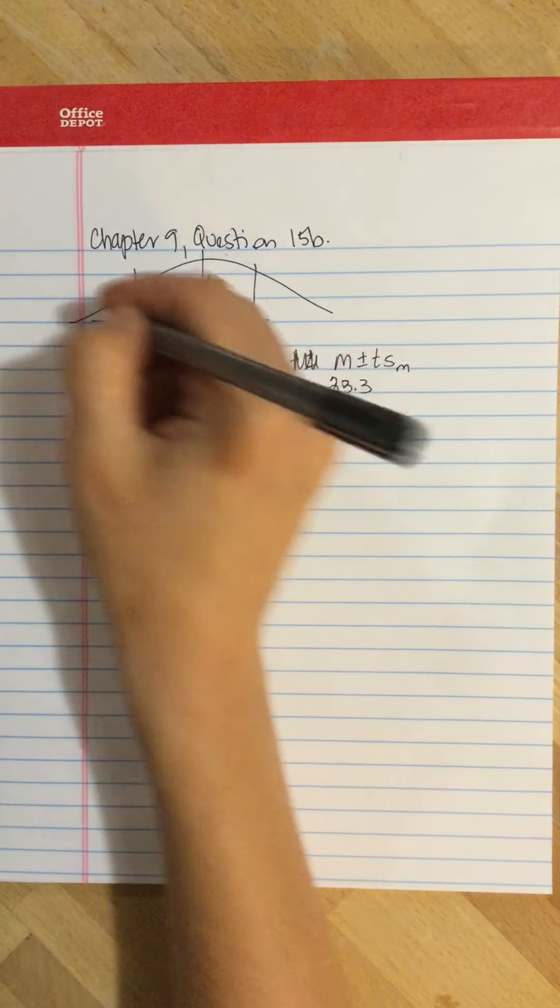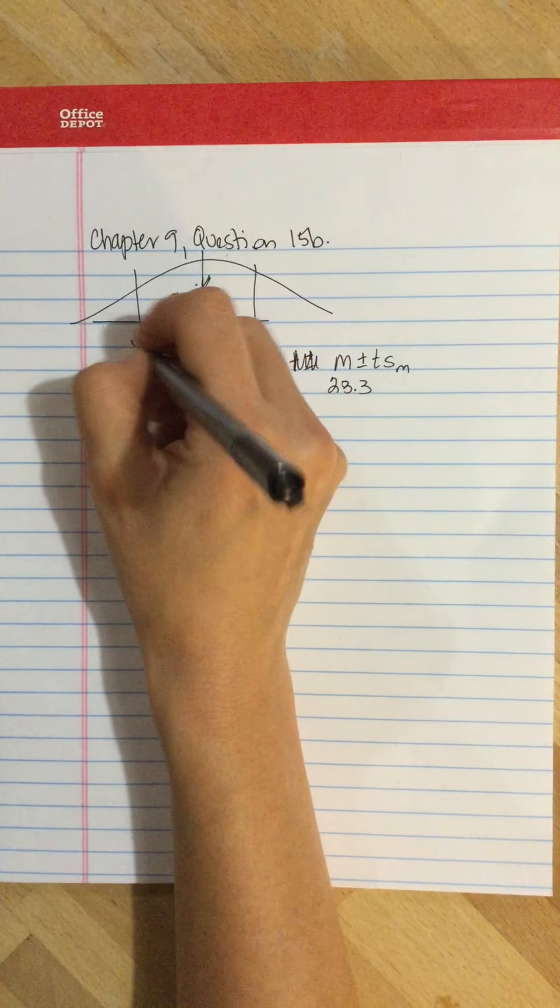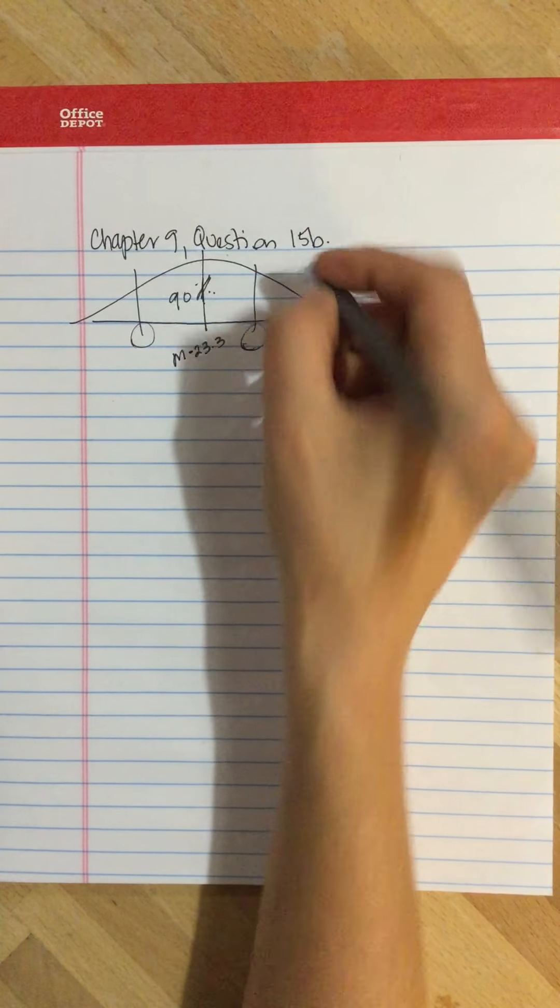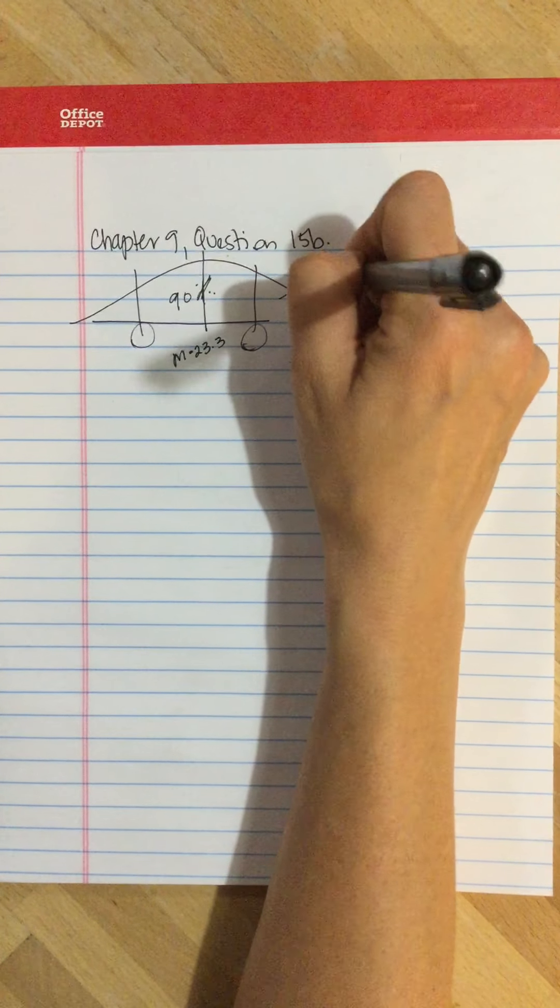For this t value, we need to find the critical values associated with having 10% in the tails.